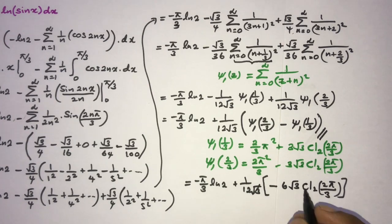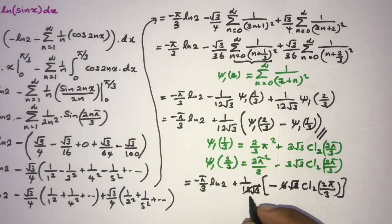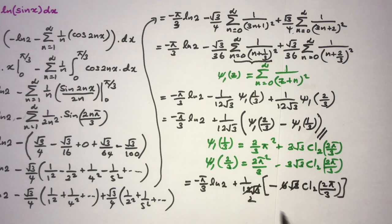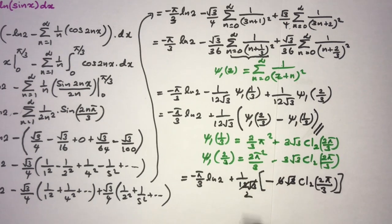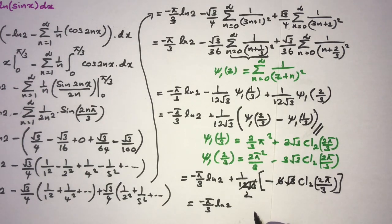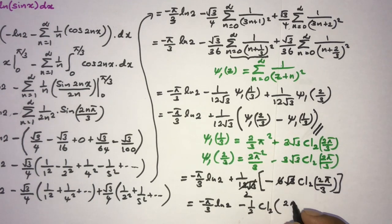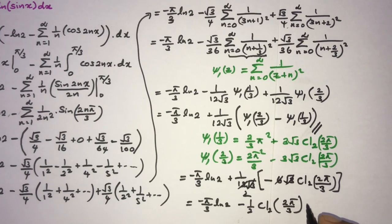The √3 and the factor of 6 simplify with the (1/(12√3)) coefficient, giving the final result: minus (π/3) ln(2) minus (1/2) · Cl₂(2π/3).